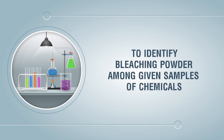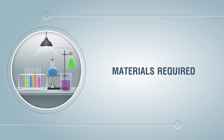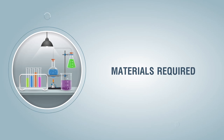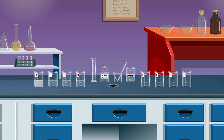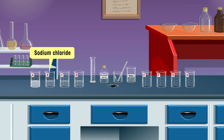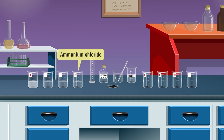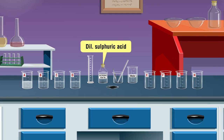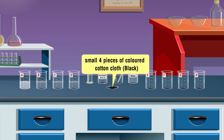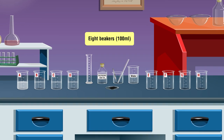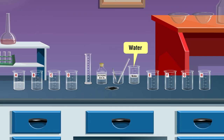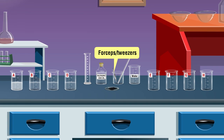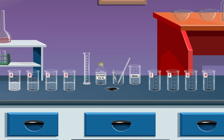To identify bleaching powder among given samples of chemicals. Materials required: given four samples of bleaching powder, sodium chloride, calcium chloride, and ammonium chloride or alternate salts; dilute sulfuric acid; small pieces of colored cotton cloth (black); eight beakers (100 ml); water; forceps/tweezers; measuring cylinder; and a glass rod.